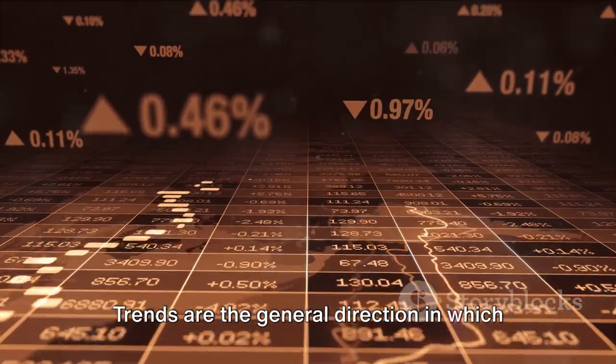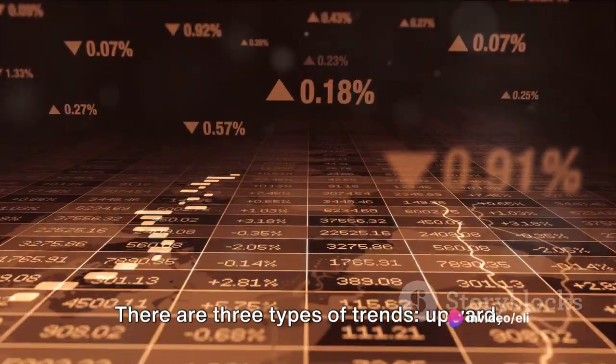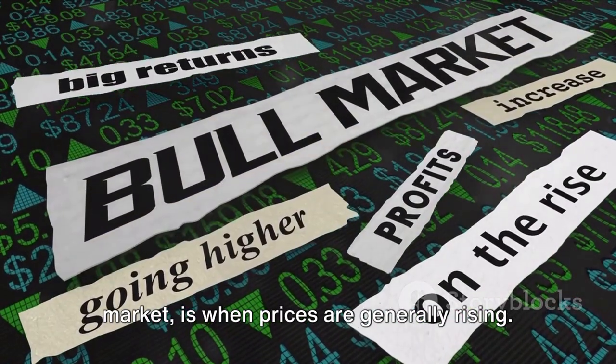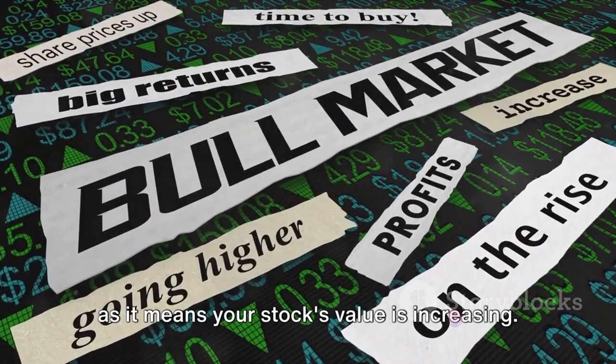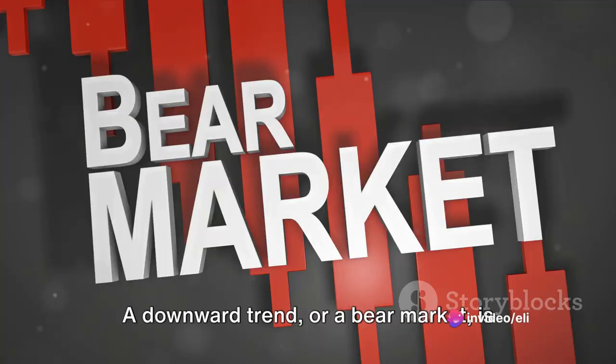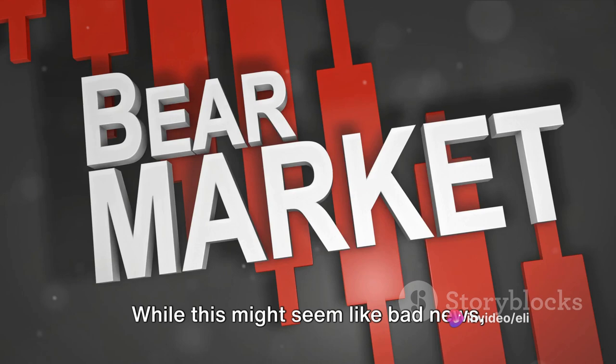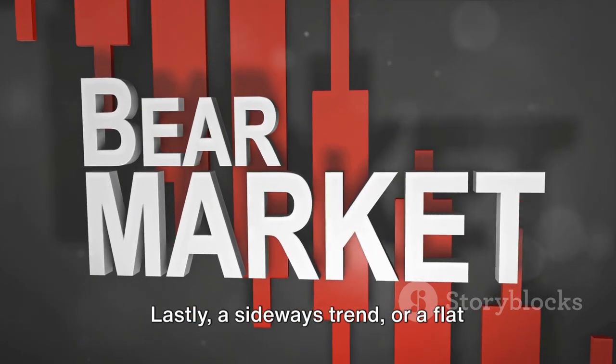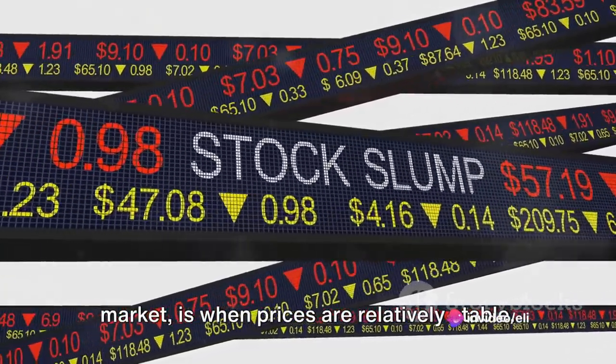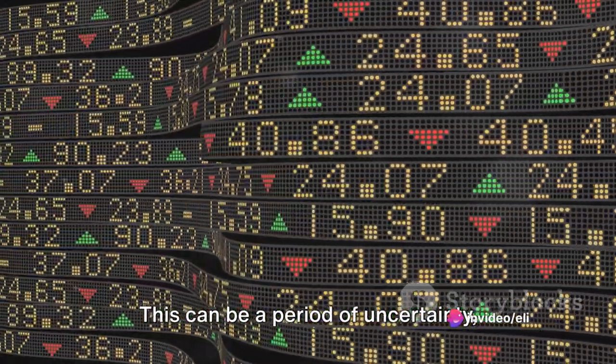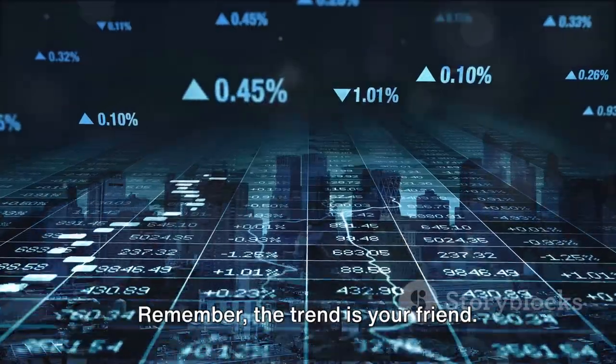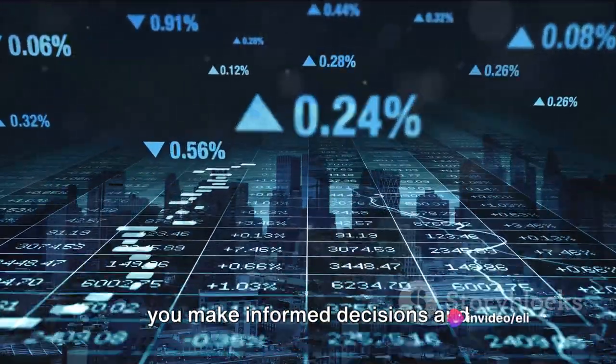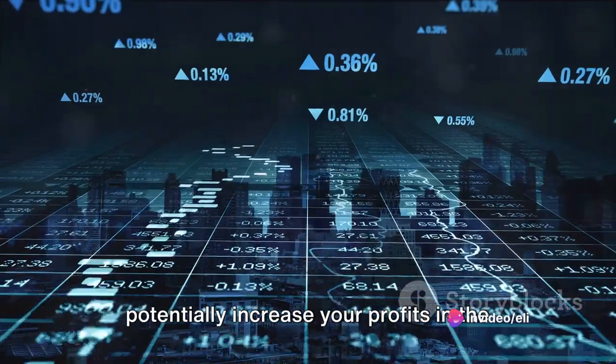Now, let's talk about trends. Trends are the general direction in which a stock's price is moving. There are three types of trends: upward, downward, and sideways. An upward trend, also known as a bull market, is when prices are generally rising. This is the ideal scenario for investors as it means your stock's value is increasing. A downward trend, or a bear market, is when prices are generally falling. While this might seem like bad news, savvy investors can use this opportunity to buy stocks at a lower price. Lastly, a sideways trend, or a flat market, is when prices are relatively stable. This can be a period of uncertainty where the market is deciding which direction to go next. Remember, the trend is your friend. Understanding these trends and how they relate to different timeframes can help you make informed decisions and potentially increase your profits in the stock market.